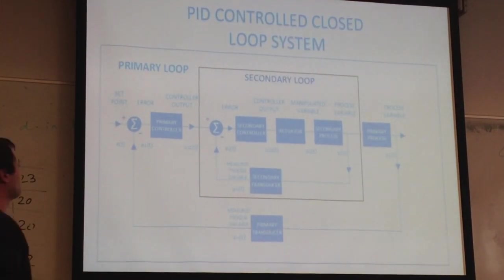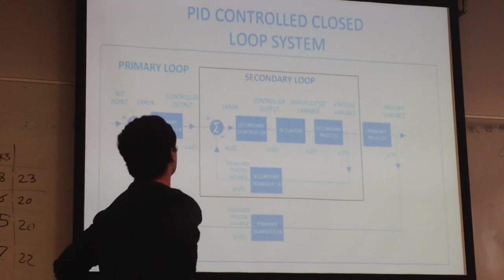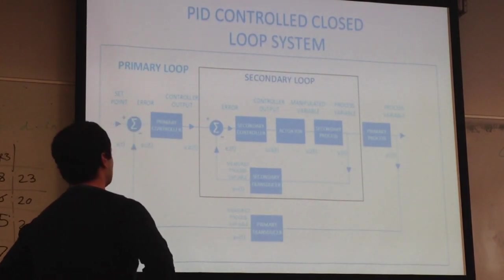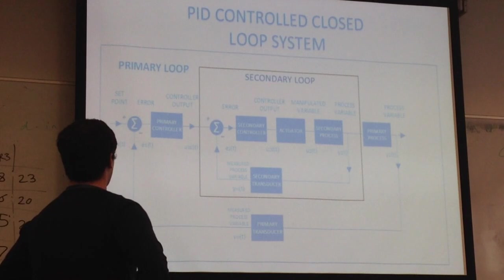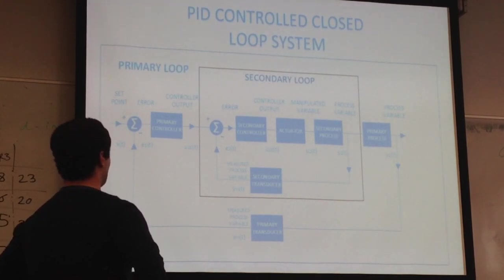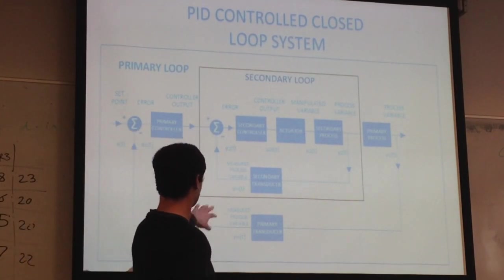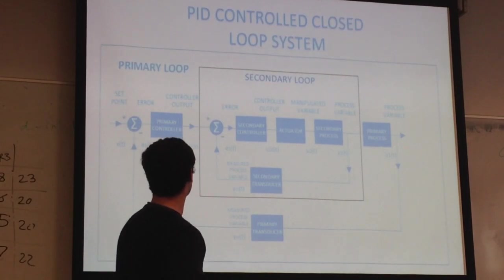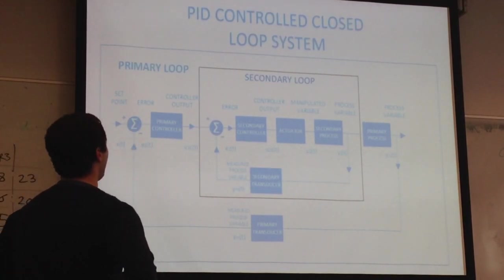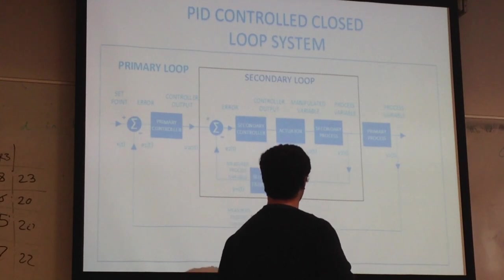So this is my PID controlled flow system. So you can see that there's a primary controller and a secondary controller. You can see the two transducers, which are the two PT100s. And you have an actuator.